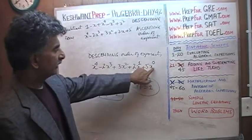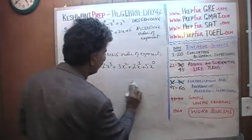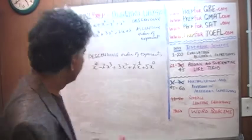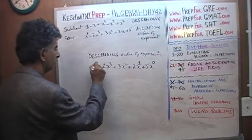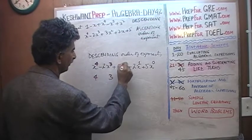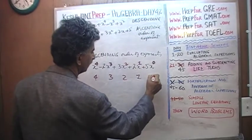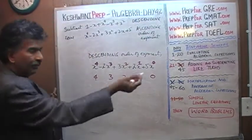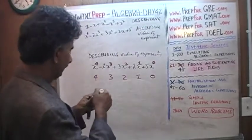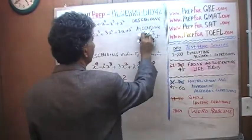So the exponents here are going in decreasing order. We have an exponent of 4, an exponent of 3, an exponent of 2, an exponent of 1, and then we have an exponent of 0. Voilà! They are going down — they are in descending order. So this from yesterday is not correct. This is the descending order.